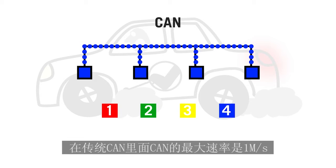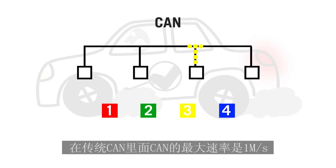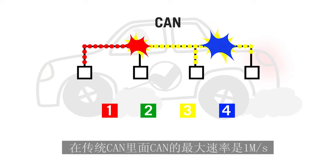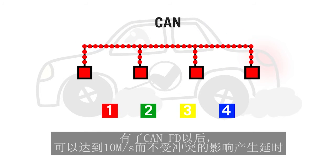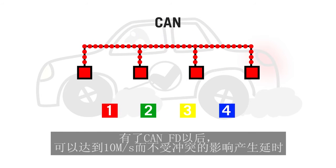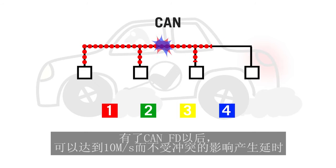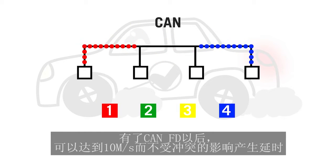The cost for this nice feature is a bitrate below one megabit per second. With CAN FD, it is possible to increase the bitrate from one to ten megabit per second, still without any delay caused by collisions.